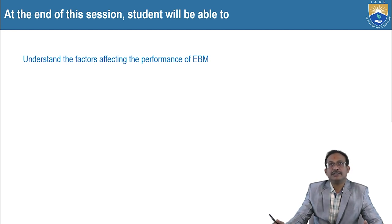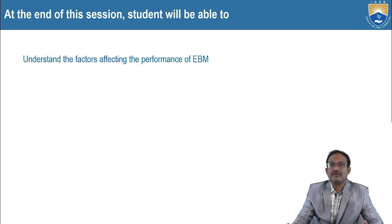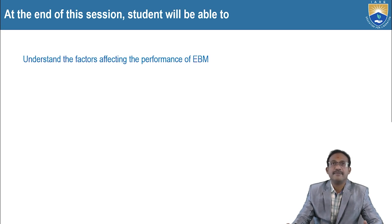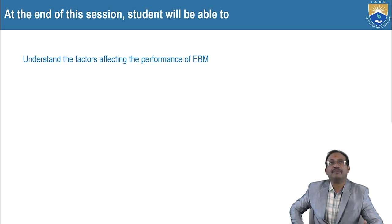This is the course learning outcome of today's topic: understand the factors affecting the performance of electron beam machinery. At the end of this session, the student will be able to understand the factors affecting the performance of electron beam machinery.